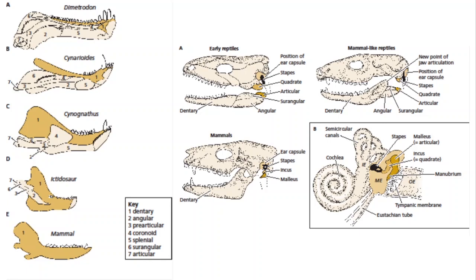The quadrate and the articular migrate up into the ear and become the incus and the stapes. Birds and reptiles have but one inner ear bone — the columella — while in mammals you have three. There are no vertebrates with two inner ear bones because two inner ear bones simply doesn't work.